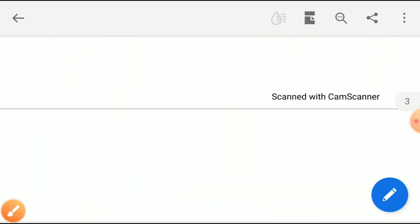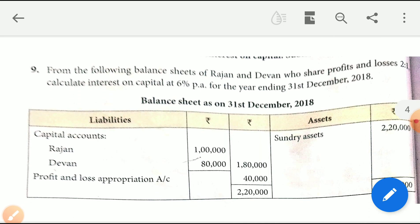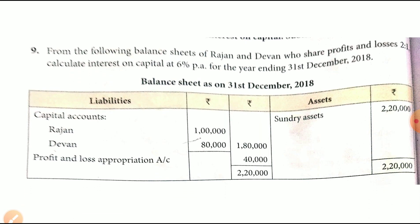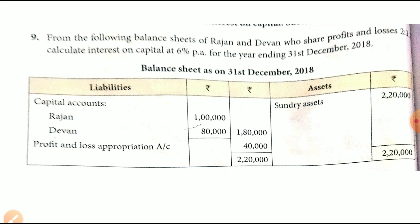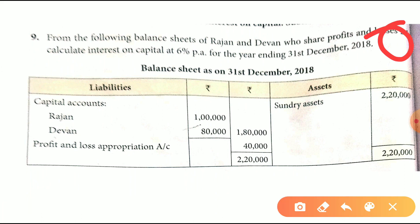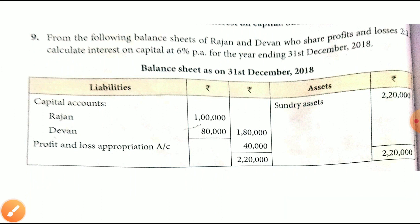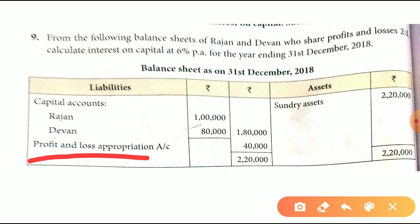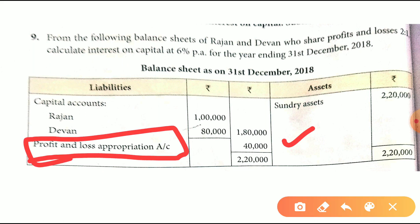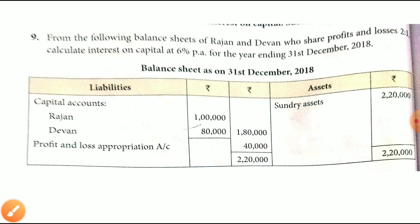Now let's look at Exercise 9. Students, from the following balance sheet for Rajan and Devan — Rajan and Devan are both partners and their profit ratio is 2 is to 1. Rajan's capital is 17,000 and Devan's is 14,000.